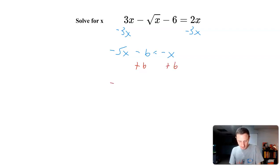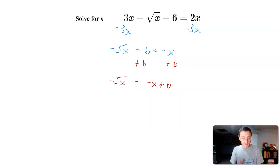I'm going to add 6 over, so I'm left with negative square root of x equals negative x plus 6. Then I'm going to divide by negative 1, leaving me with square root of x equals positive x minus 6.